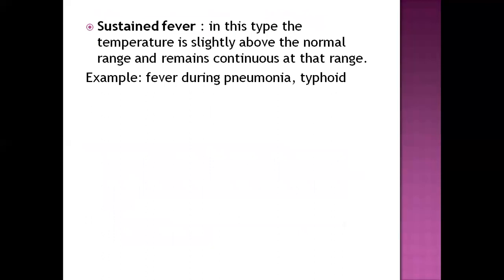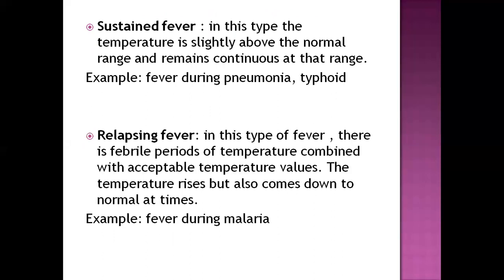Next is sustained fever — body temperature continuously rises above normal and remains at that range without coming back to normal. It requires treatment to return to normal. Examples include typhoid and pneumonia. Next is relapsing fever, which is recurring — there are discontinuous febrile periods with acceptable temperature values in between. Temperature rises but also comes down to normal at times. An example is fever during malaria.